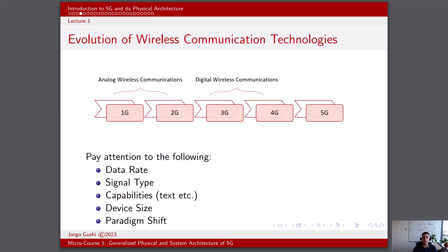The evolution of wireless communication technologies from 1G to 5G has been a transformative journey marked by significant advancements in data rates, signal types, capabilities, device sizes, and overall communication paradigms. Here's an overview of the key components at each generation.